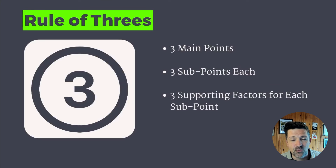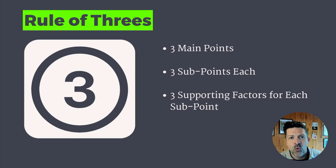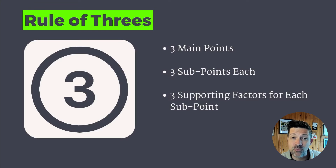Kicking it off with the rule of threes. Your brain can easily handle three main points. If you get outside of three — into four, five, six, seven, eight, nine — your brain just starts to freeze up and it doesn't remember any of it. So when you are preparing your speech, think about nesting things in rules of three: three main talking points, each one of those having three main subsections, and each subsection having three supporting factors.